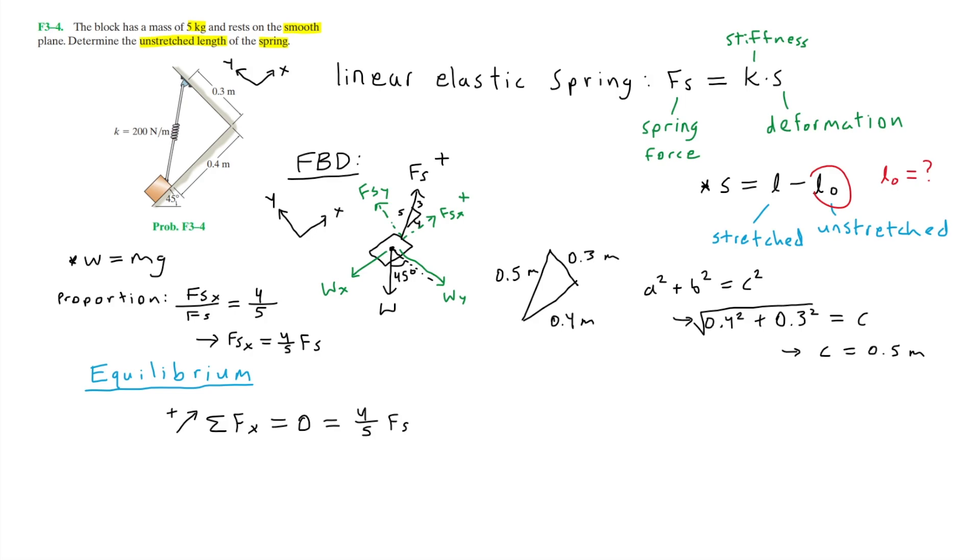Because we rotated our coordinate axis, the downward weight now has two components, one in the y direction and one in the x direction. Knowing the mass of the block, we can now find weight by setting W equal to mg. We have 5 kilograms, which is the mass, times the acceleration due to gravity g, which is 9.81 meters per second squared. From this, the weight of the block is equal to 49.05 newtons.